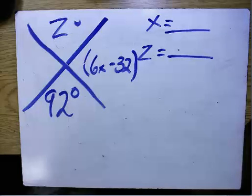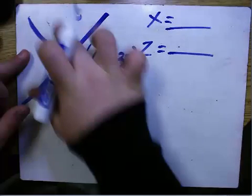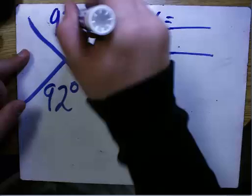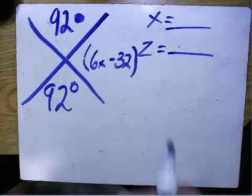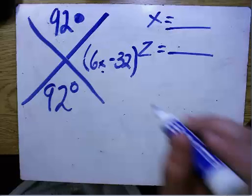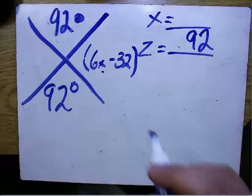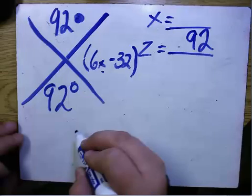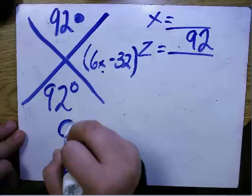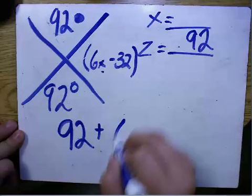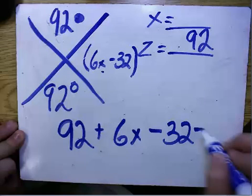So we're going to erase the z over here and put 92 degrees. Now we're going to make an equation to find x. We already know that 92 degrees is z, so what we're going to do is put 92 plus 6x minus 32 equals 180.